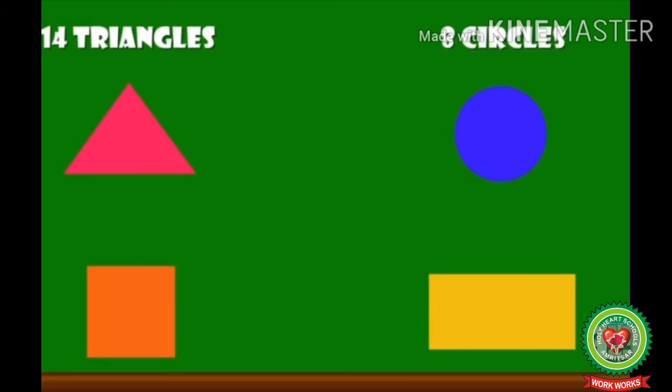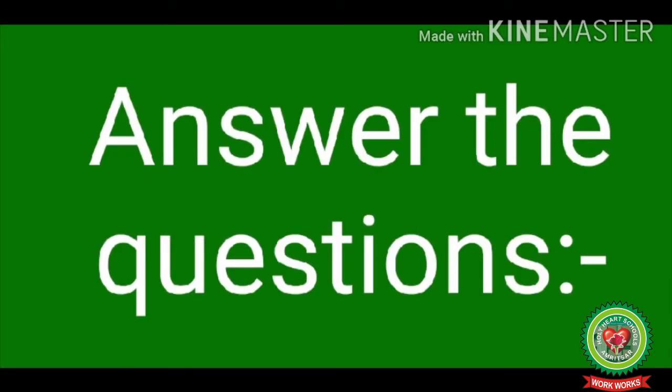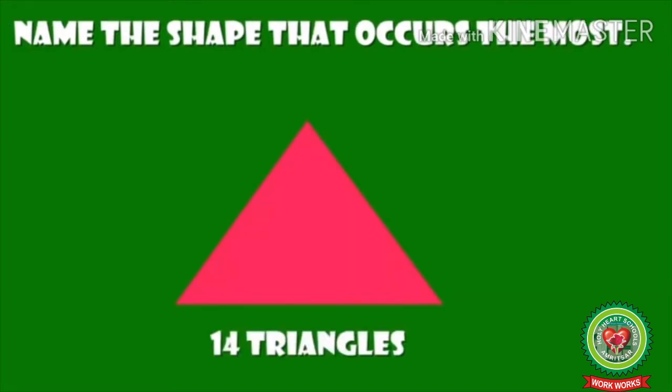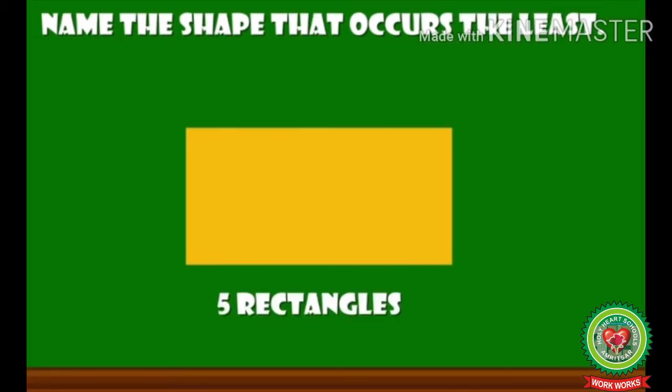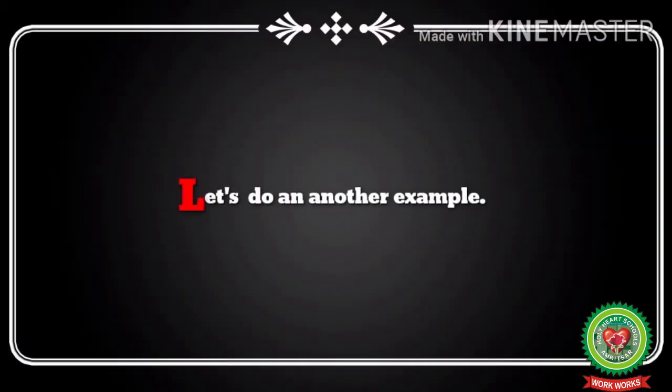So we have 14 triangles, eight circles, seven squares, and five rectangles. Now we will answer some questions. Question one: name the shape that occurs the most — the answer is triangles. Question two: name the shape that occurs the least — the answer is rectangles.